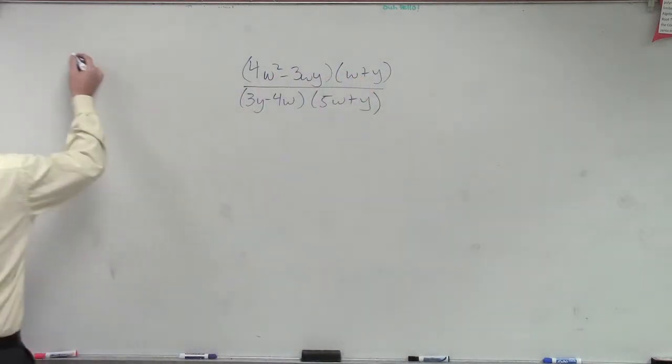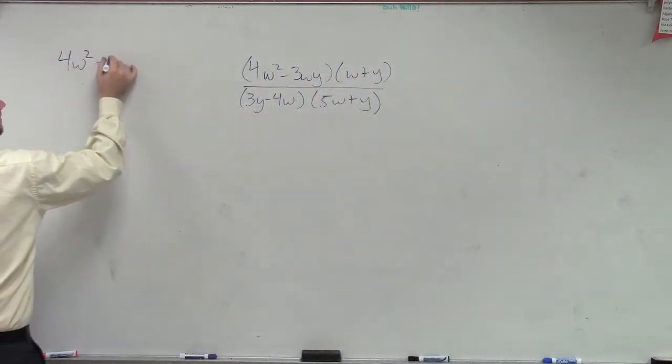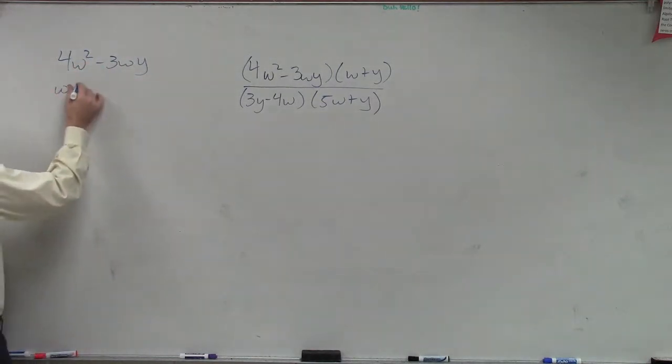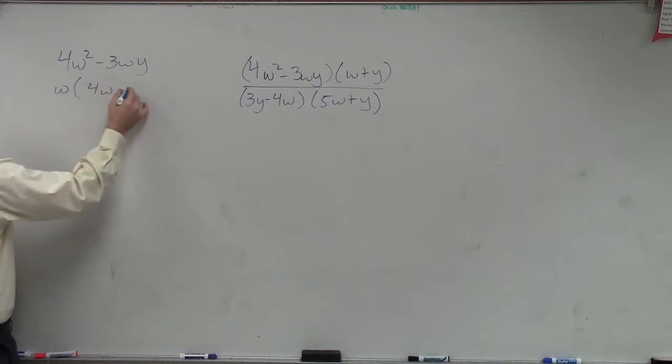So let's rewrite this. 4w minus 3wy. Can I factor anything out of those terms? W, right? Factor out w, I'm left with 4w minus 3y. Very good.